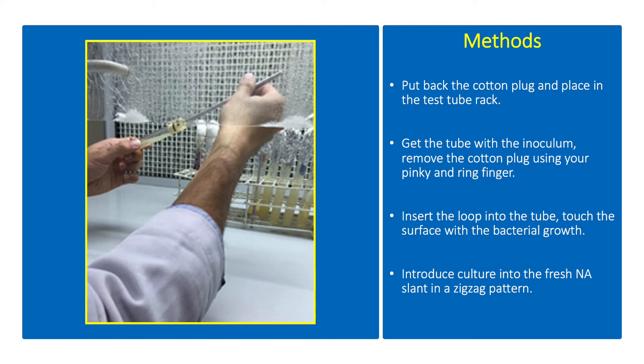Get the tube with the inoculum. Remove the cotton plug using your pinky and ring finger. Insert the loop into the tube and touch the surface with the bacterial growth. Inoculate the culture into a fresh NA slant in a zigzag pattern.